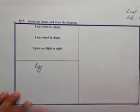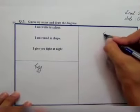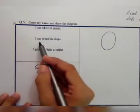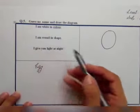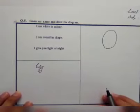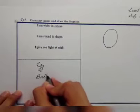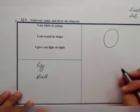And here I can draw a picture of egg like this one. Next one is I am round in shape. So guess which thing is round in shape. Here I can write a ball. Now we can draw a picture of ball.